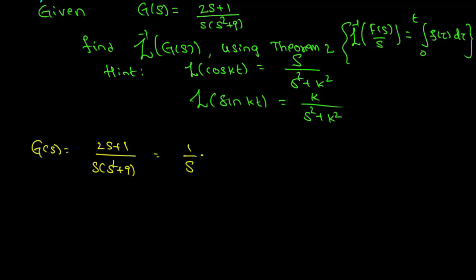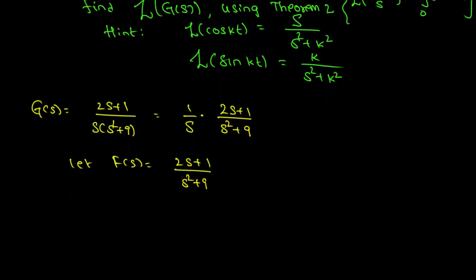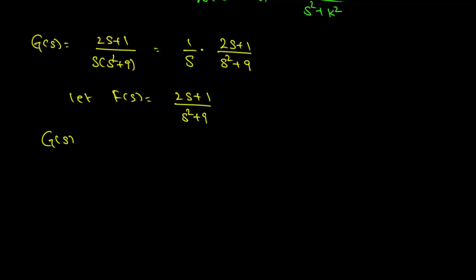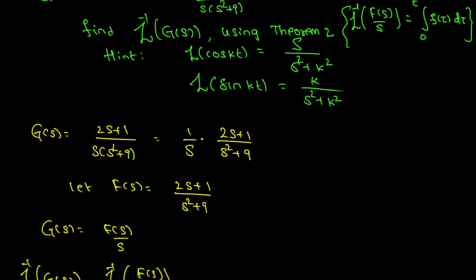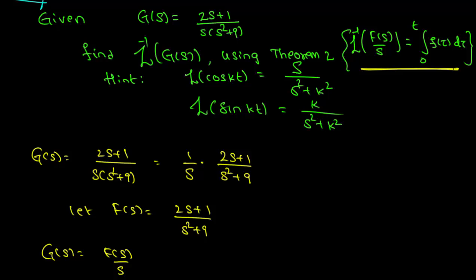This can be written as (1/s) · (2s + 1) / (s² + 9). Let us say F(s) = (2s + 1) / (s² + 9), so we have g(s) = F(s) / s. Therefore, the inverse Laplace transform of g(s) is the inverse Laplace transform of F(s)/s. This is where we use Theorem 2.